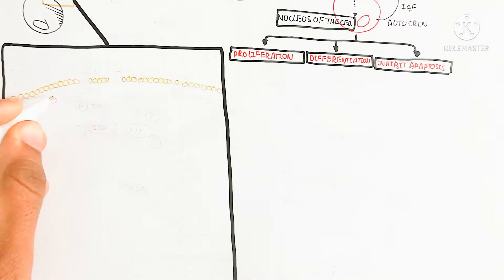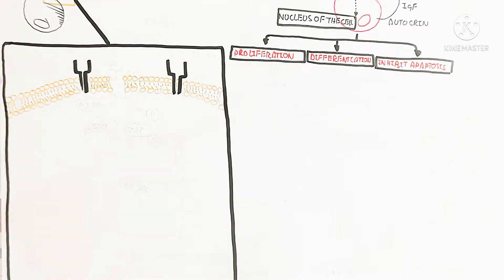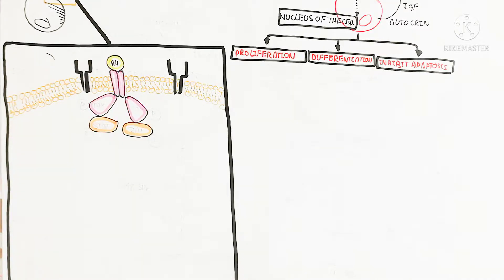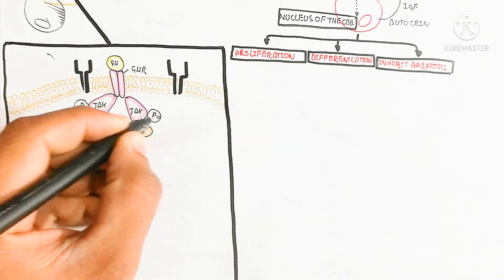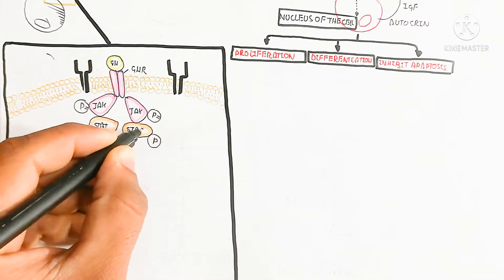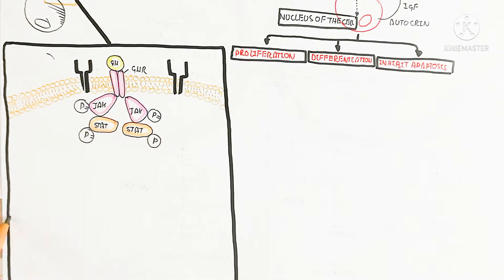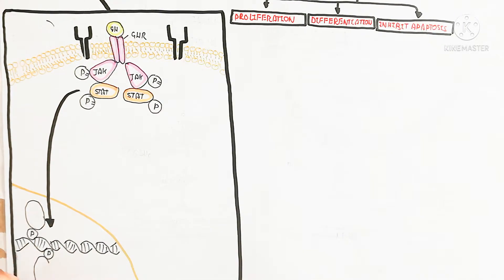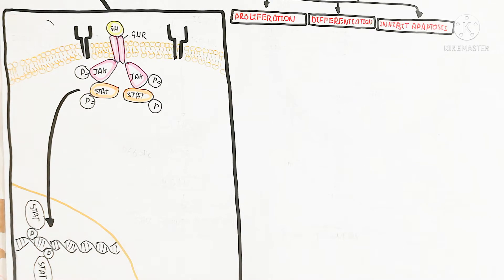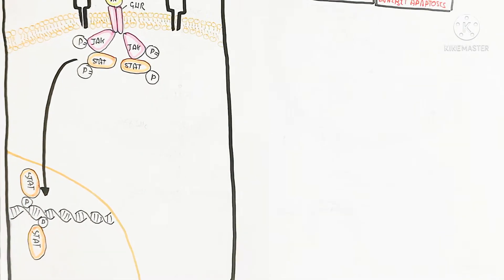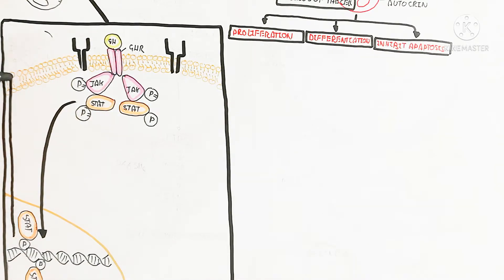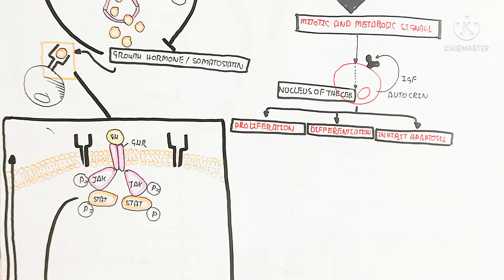Here is a cell containing a growth hormone receptor. The bilayer of the phospholipid plasma membrane of the somatic or stem cell contains the growth hormone receptor, which binds and activates the JAK and STAT pathway. JAK and STAT proteins are phosphorylated. After phosphorylation, STAT moves to the nucleus and binds with DNA as a transcription factor.